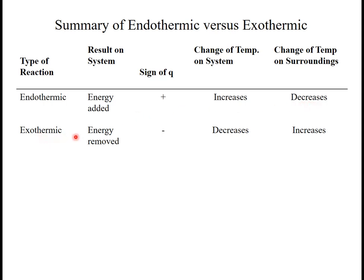For an exothermic, heat is removed, or heat's being given off by the system, emitted by the system. So Q is negative. So the system temperature decreases, but to us in the surroundings, it increases. So you have to pay attention to whether you're talking about the system or the surroundings when you're doing heat of reaction problems.